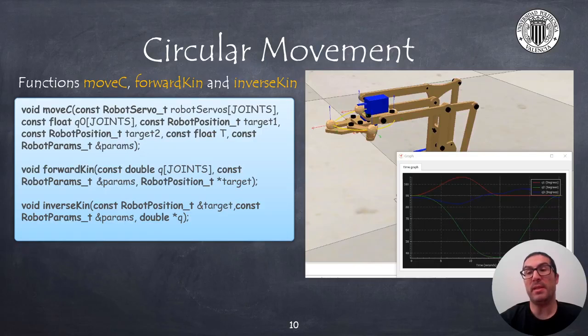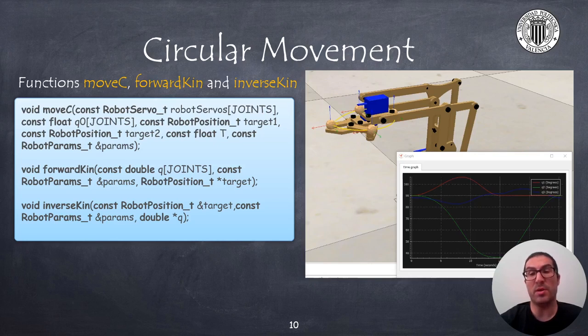To implement the movec function, you must first compute the transformation associated with the three points, being the first point computed from the current gripper position that is actually provided with the current joint configuration using the forward kinematics. Once the transformation is obtained,